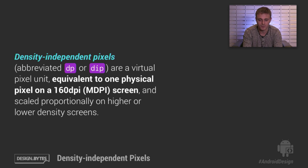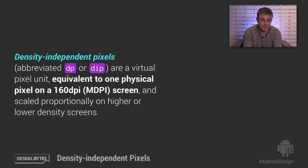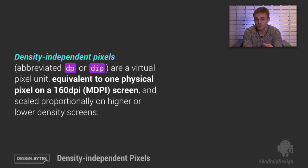If you have a single density-independent pixel on an MDPI screen, that's one physical pixel. But if you're on a larger screen — say an XHDPI screen — it's actually four pixels: two across and two down.